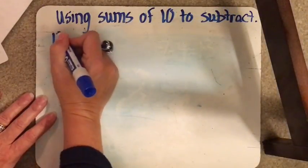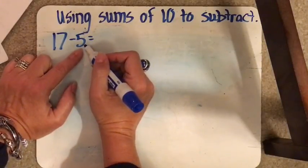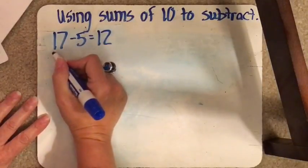Okay, so we're going to do a couple more here. We're going to do 17 minus 5. So we're going to ask ourselves 5 plus 5 gets us to 10. And then we're going to add another 7 to that. So 5 plus 7 equals 12.